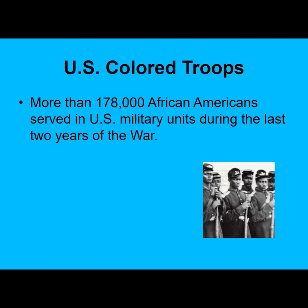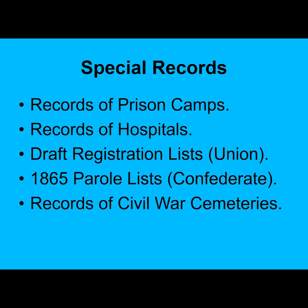More than 178,000 African Americans served in U.S. military units during the last two years of the war. Search for their service records in many of the same sources in which whites were registered. The National Archives and State Archives have a variety of special military records, not all of which are online. They include records of prison camps and hospitals, draft registration lists, Confederate paroles at the end of the war, and records of Civil War cemeteries.